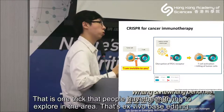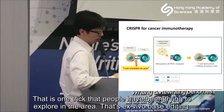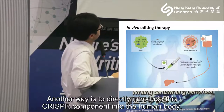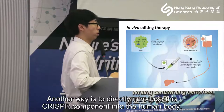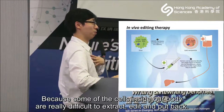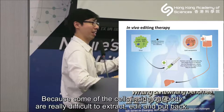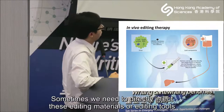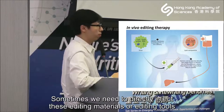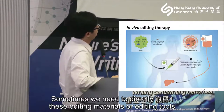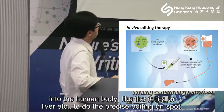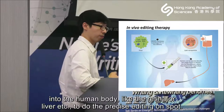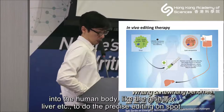That is still ex vivo-based editing. Another way is to directly introduce these CRISPR components into the human body, because some cells inside our bodies are really difficult to extract, edit, and put back. Sometimes we need to directly inject the editing materials or editing tools into the human body — like the retina or liver — to do the precise editing on site.